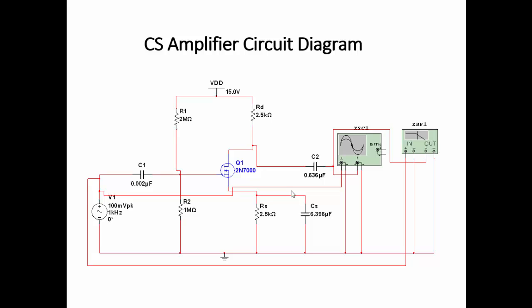The calculated values are: R1 = 2 megaohms, R2 = 1 megaohm, Rd and Rs = 2.5 kilohms, C1 = 0.002 microfarad, C2 = 0.636 microfarad, and Cs = 6.396 microfarad. Let us simulate the circuit and observe the frequency response.